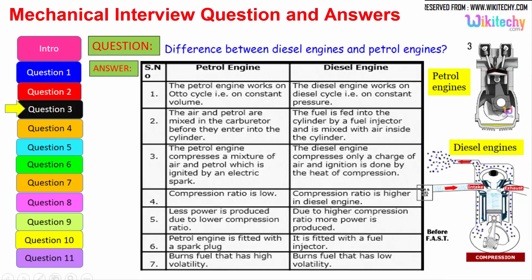The air and petrol are mixed in the carburetor before they enter into the cylinder. The fuel is fed into the cylinder by a fuel injector and is mixed with the air inside the cylinder. The petrol engine compresses a mixture of air and petrol which is ignited by an electrical spark. The diesel engine compresses only a charge of air and ignition is done by the heat of compression.